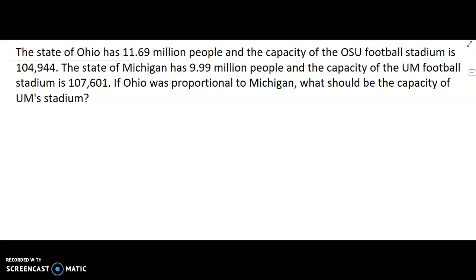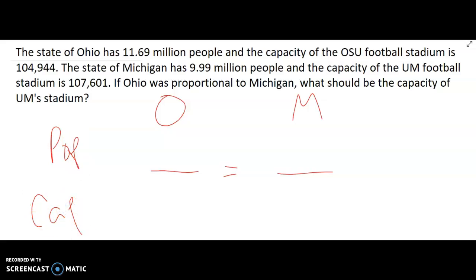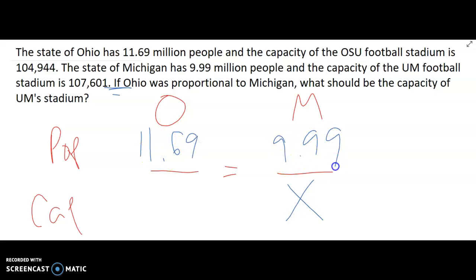The question is asking what that capacity should be. When setting this up, we're comparing Ohio to Michigan — these are my two ratios — and we're comparing the population of the state to the capacity of the football stadium. I always recommend figuring out your unknown first. The unknown is Michigan's stadium capacity. The other three values: Ohio has 11.69 million people, Michigan has 9.99 million people, and the Ohio stadium has 104,944.